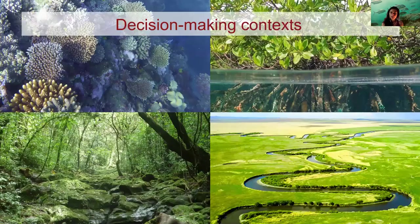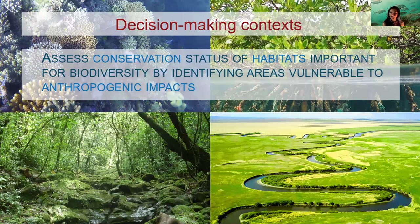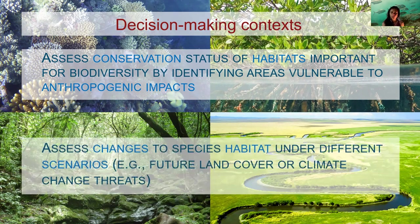The habitat quality model is useful in two key decision-making contexts. First, it can help assess the conservation status of habitat important for biodiversity by identifying areas vulnerable to anthropogenic impacts, especially where habitat data in terms of presence and absence are scarce. It can also be applied to assess changes to species habitat under different scenarios, such as future land cover or climate change threats.